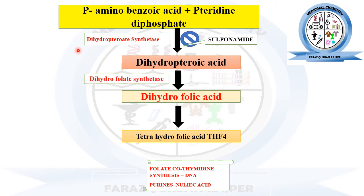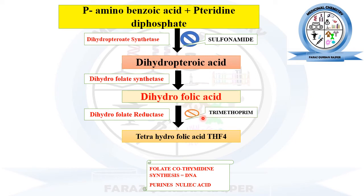The next enzyme in the next step is dihydrofolate synthetase, which converts dihydropteroic acid into dihydrofolic acid. In the following step, dihydrofolate reductase converts dihydrofolic acid into tetrahydrofolic acid. Trimethoprim is the drug that inhibits this step — the conversion of dihydrofolic acid into tetrahydrofolic acid. Once trimethoprim blocks this step, folic acid and thymidine synthesis will not occur and the growth of the bacterial cell and DNA synthesis will not proceed. In this way, these two drugs — sulfonamide and trimethoprim — act as inhibitors for bacterial DNA synthesis.